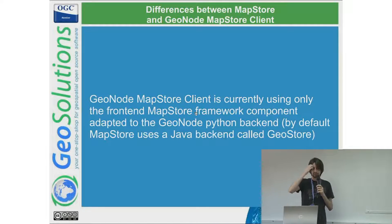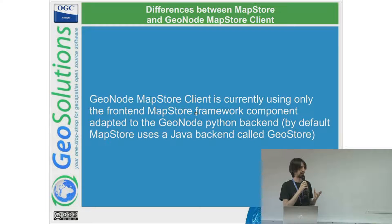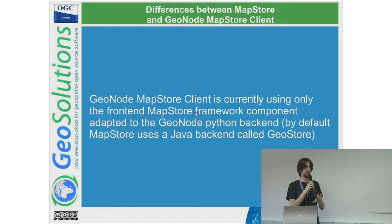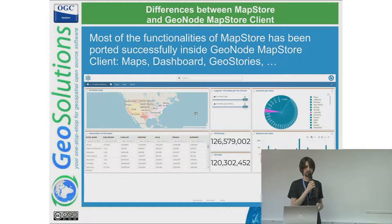A common question in the community is: what's the difference between MapStore and the GeoNode-MapStore client? Currently, GeoNode-MapStore client uses the MapStore framework — the front end — but does not include the back end, because MapStore provides a GeoStore back end that is not included in GeoNode. When working on the integration, we take piece by piece what GeoNode provides and integrate it into the core environment. Most functionality in MapStore has been successfully ported, like maps, dashboards, viewers, and GeoStories.